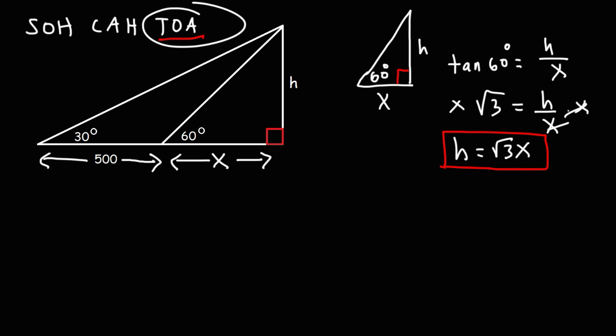Now we have two variables, h and x. In order to calculate h, we need another equation. In order to solve for two variables, you need at least two equations to do that.